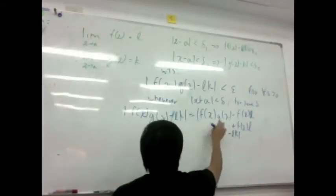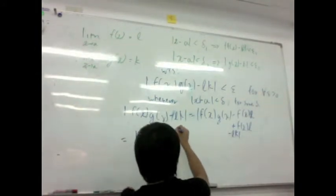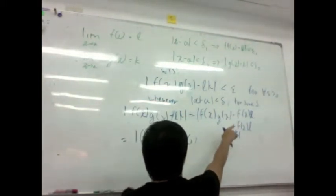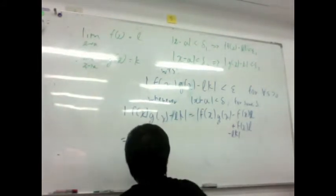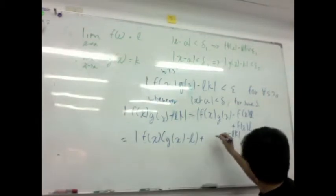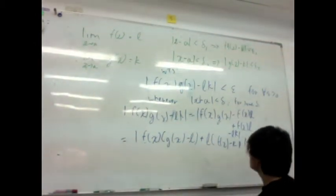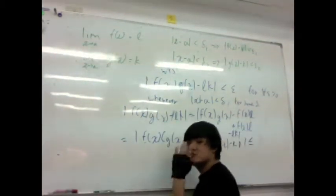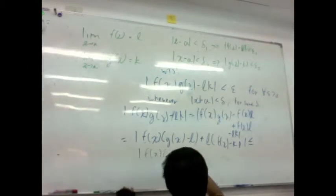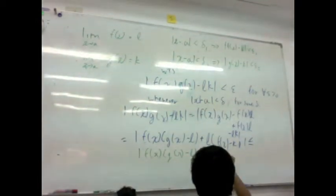But you know that this guy, you group them. This guy is equal to f of x times g of x minus l, actually not f of x, f of x times g of x minus l plus l times f of x minus k.